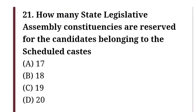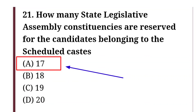How many state legislative assembly constituencies are reserved for candidates belonging to the Scheduled Caste? Option A: 17, option B: 18, option C: 19, option D: 20. The correct answer is option A, that is 17.